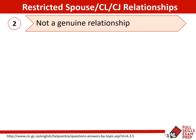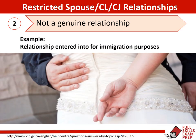Number two deals with the genuineness of the relationship. This one is pretty common sense — if there is any type of scenario in your exam that involves a couple getting married primarily for immigration purposes or as part of a scam, of course that person can't be sponsored. That's a fake marriage essentially.